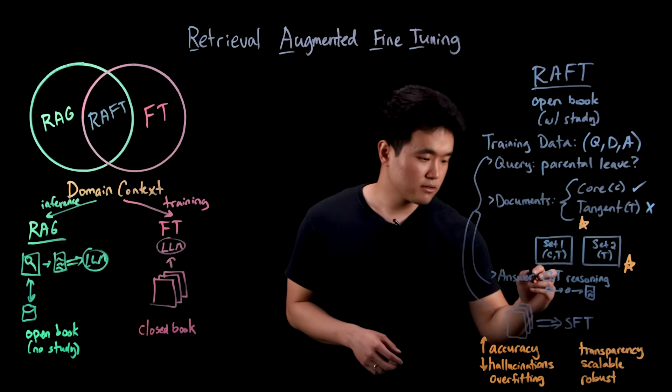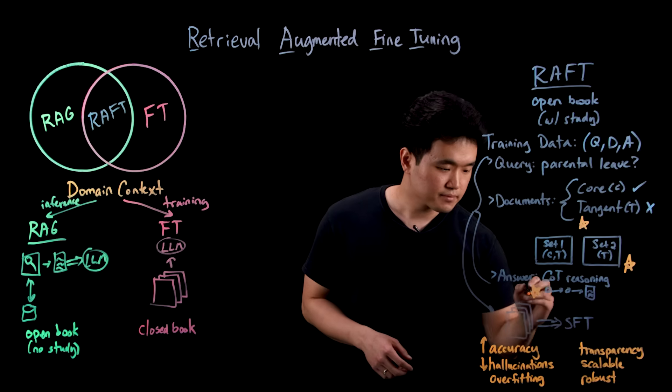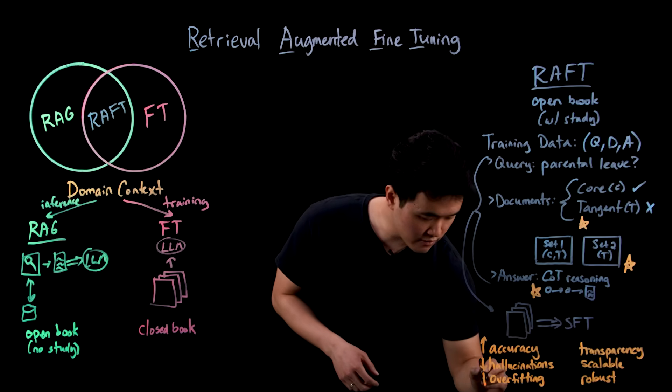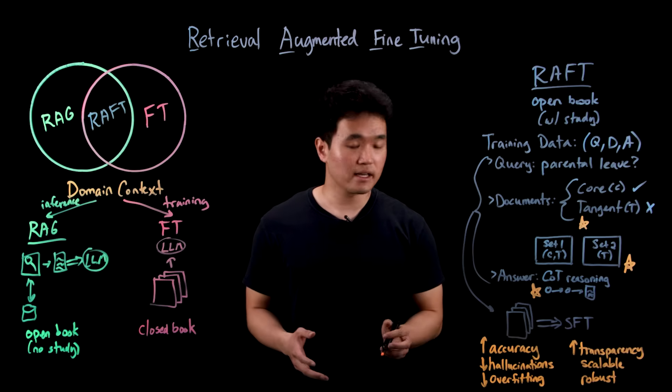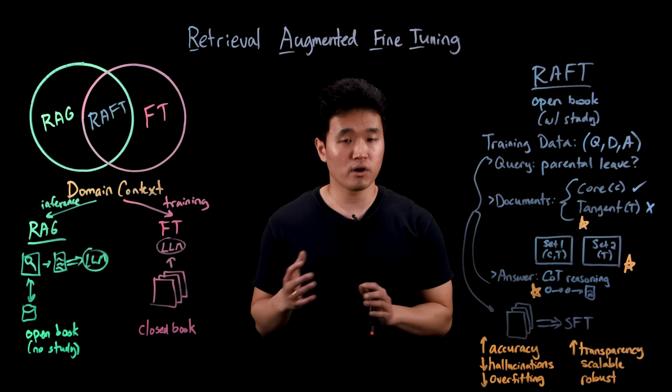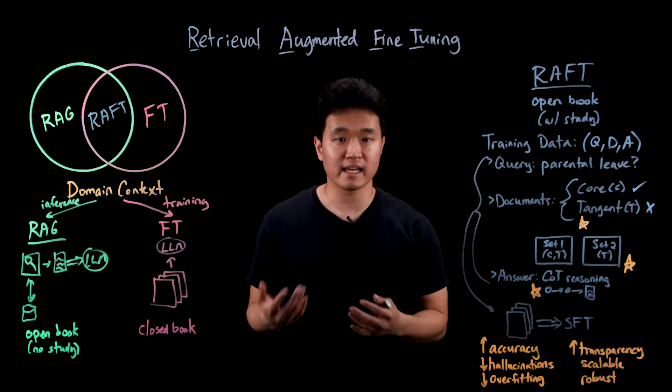Third, guiding the model using chain of thought reasoning helps to minimize overfitting and increase transparency and traceability by encouraging the model to quote specific documents from which it got the answer from.